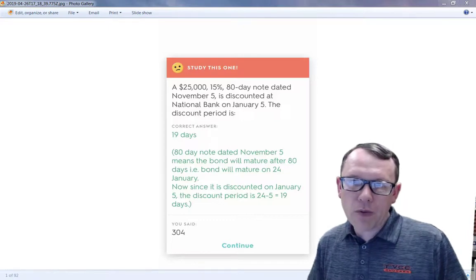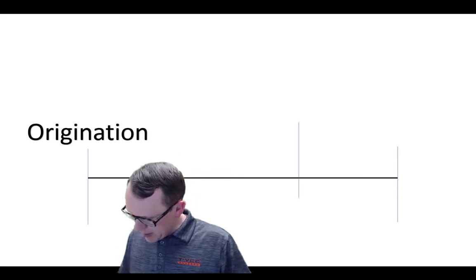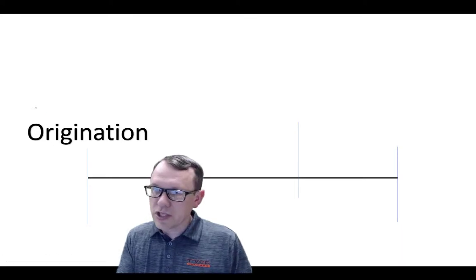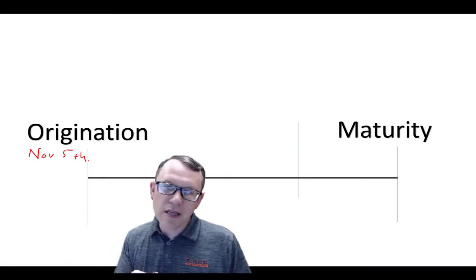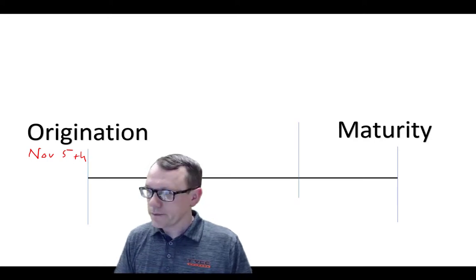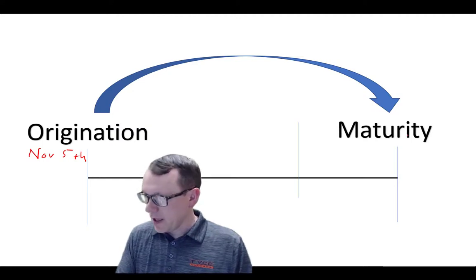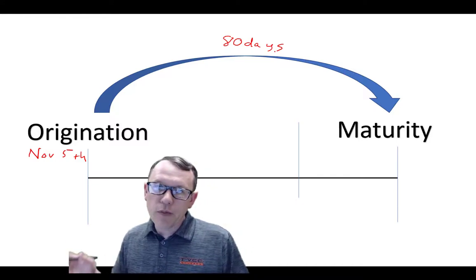To do that, I'm going to pull up my PowerPoint. To begin with, we have the origination date, which is November 5th. As we go forward, all the way at the other end we have the maturity date. That's when the note is due, when the note's going to be paid off. That's going to be 80 days, all the way from origination to maturity.